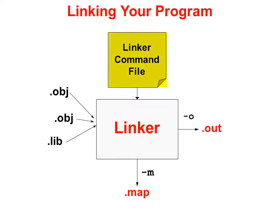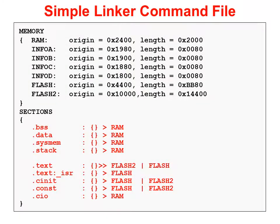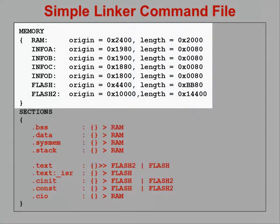The linker can run without the command file, but the resulting program probably wouldn't work. The linker command file shown here is a simplified version of the default file provided by TI for each of its MSP430 devices. Linker command files mostly consist of two parts: first, a description of the available memory — what memory can the linker allocate stuff to — and you can see how this matches our F5529 memory map. Second, the sections part tells the linker where to put each section — for example, this file tells the linker to place .bss, the global variables, into RAM, and the code, the .text section, has been linked into Flash.